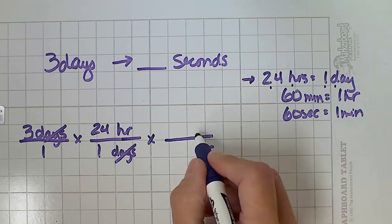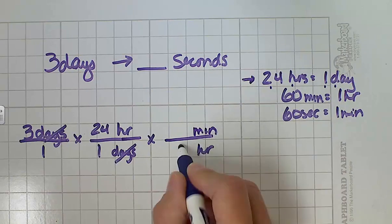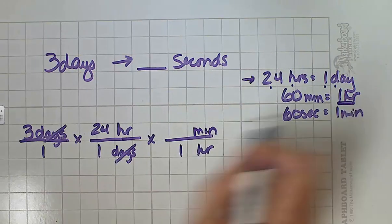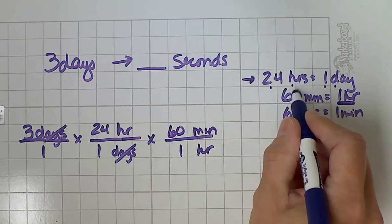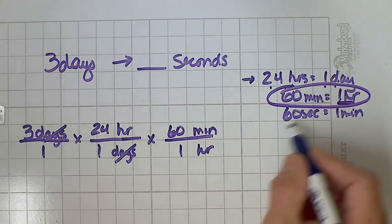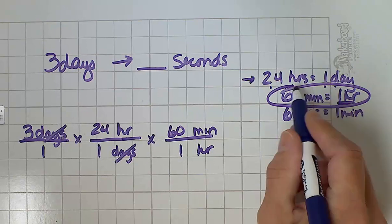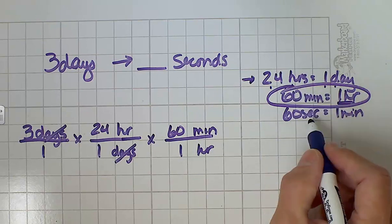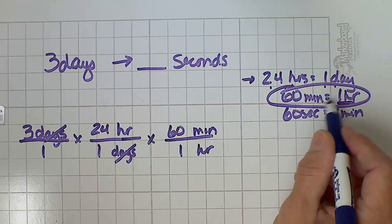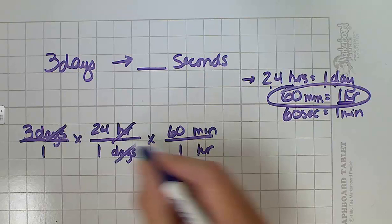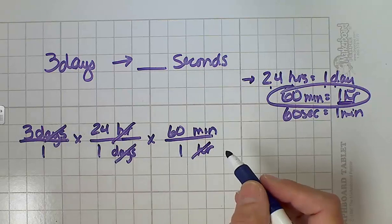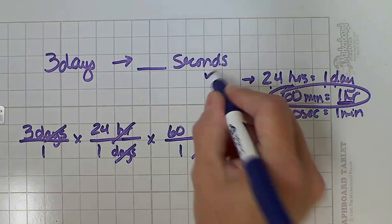And I know how to convert from hours to minutes. One hour is 60 minutes. Now notice we used this conversion factor this time because I was changing hours to minutes. I'm no longer changing hours to days or days to hours, I'm changing hours to minutes. So I have to use the conversion factor, or the equivalent of one, that is minutes and hours. So now I have my information in minutes, but my question said how many seconds.